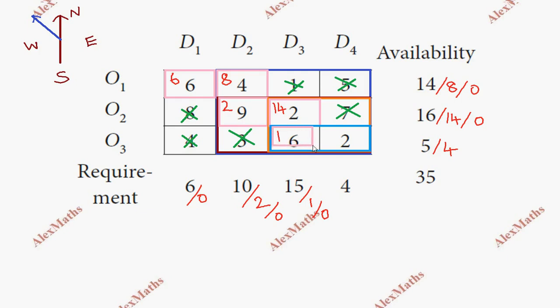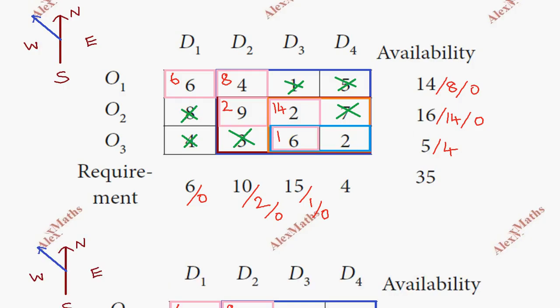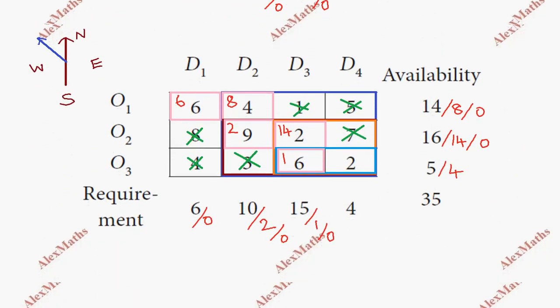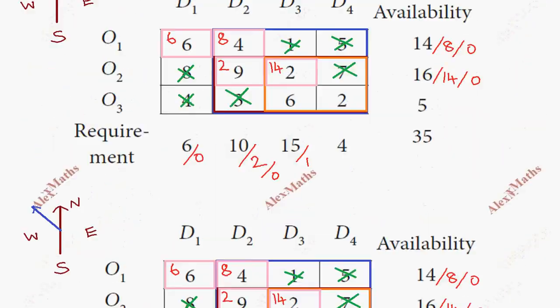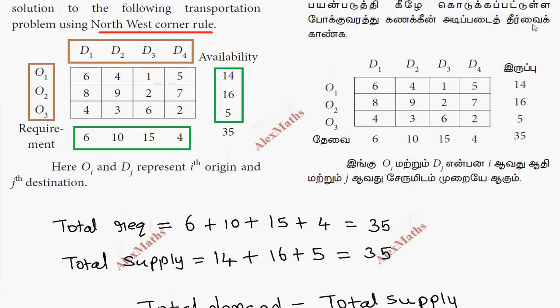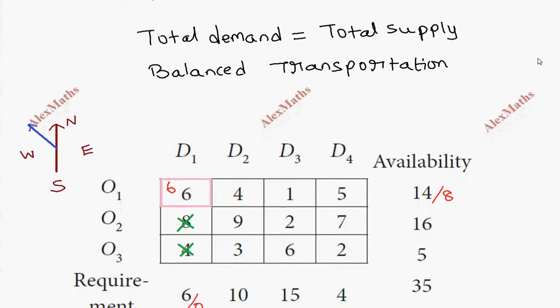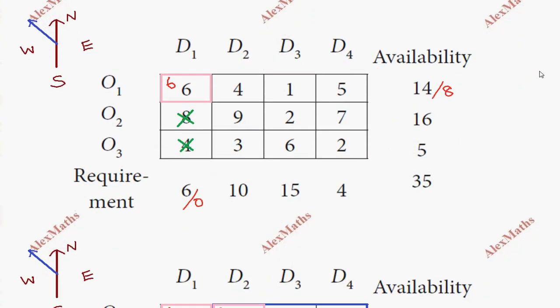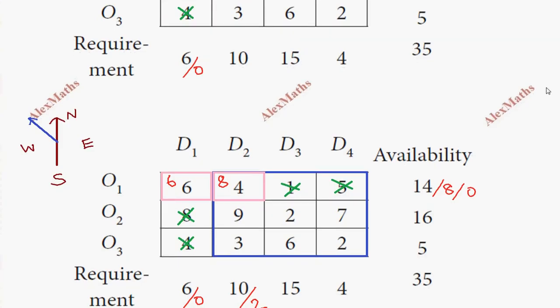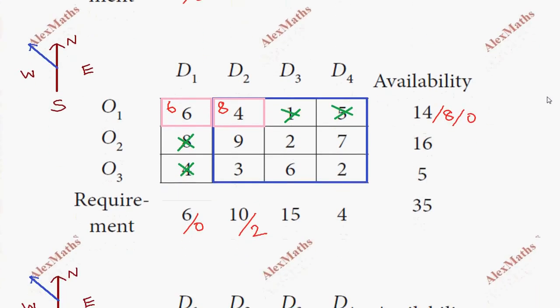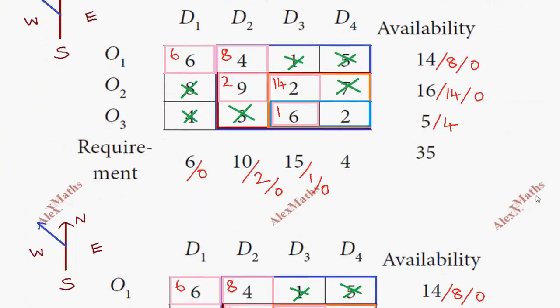For the final allocation, the north-west corner has requirement 4 and availability 4. We supply all 4 units, making both availability and requirement 0. The complete allocation is done. We allocated step by step. Once supply equals demand, the balance is complete.